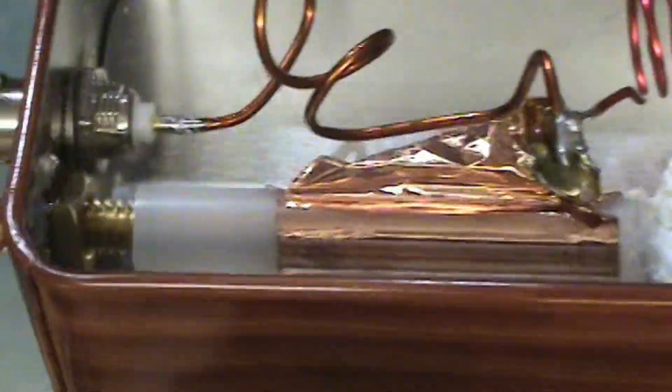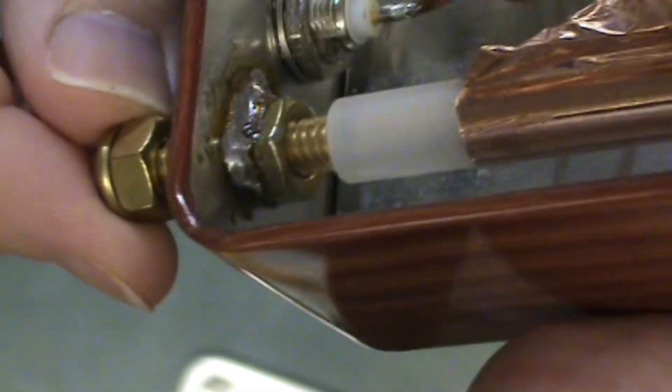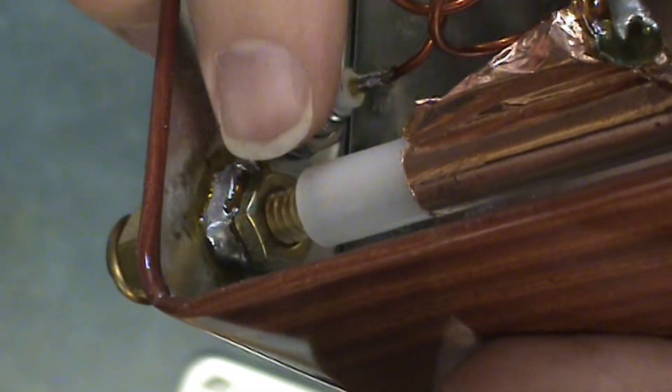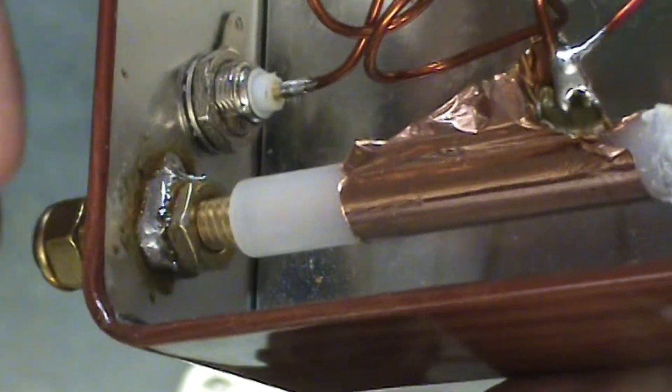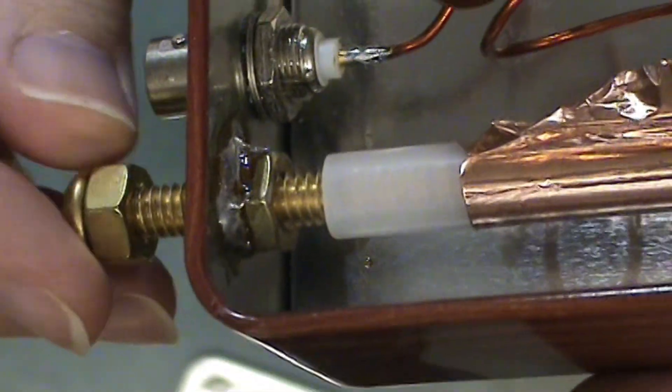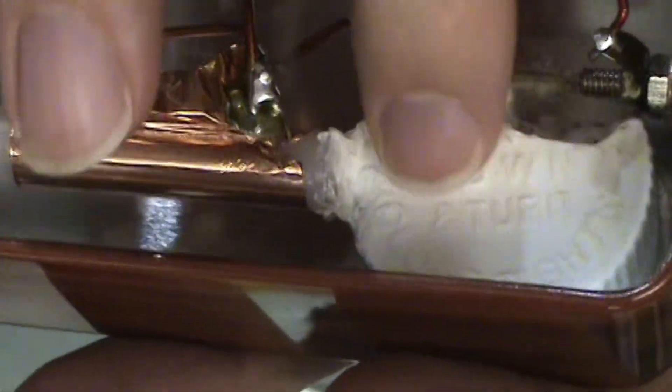And I have going into it a brass screw, and the brass screw, the nut on the brass screw on the inside is soldered to the box and that provides the ground connection. And then the screw is actually one of the capacitor plates and then the other capacitor plate is this foil here on the outside.